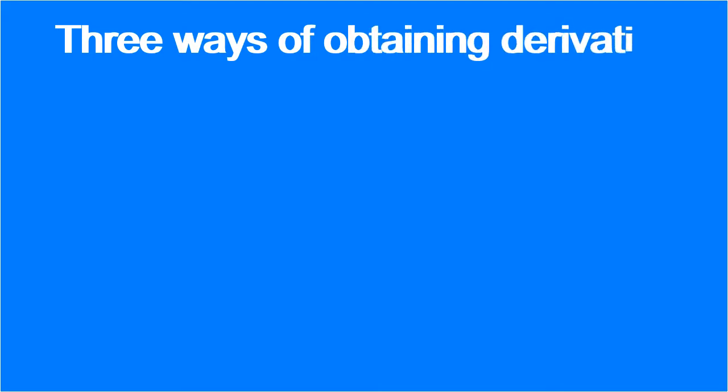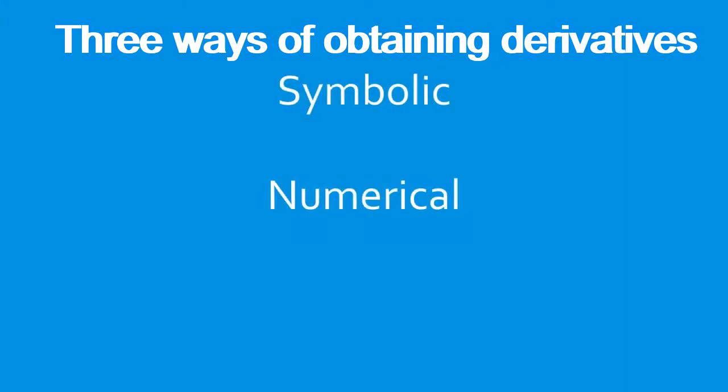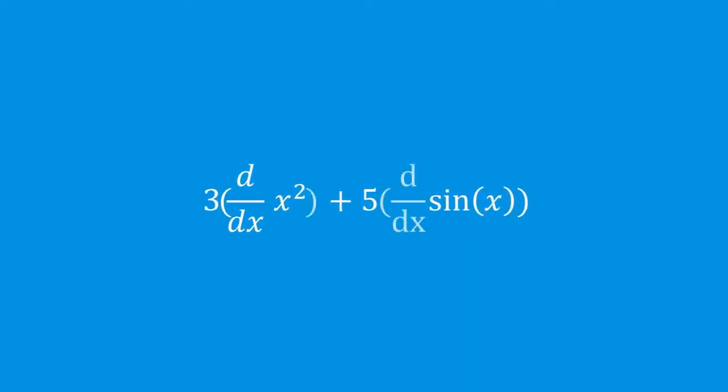Symbolic differentiation, numerical differentiation, and automatic differentiation. First, symbolic differentiation. Think back to taking derivatives in calculus class. You would apply rules to differentiate a function step by step, eventually ending up with an analytic solution for the derivative of the function. Symbolic differentiation works the same way. The computer applies the rules of differentiation step by step to a function, and returns an analytic expression for the derivative. You can then use that expression to obtain the derivative of a function at a specific point.